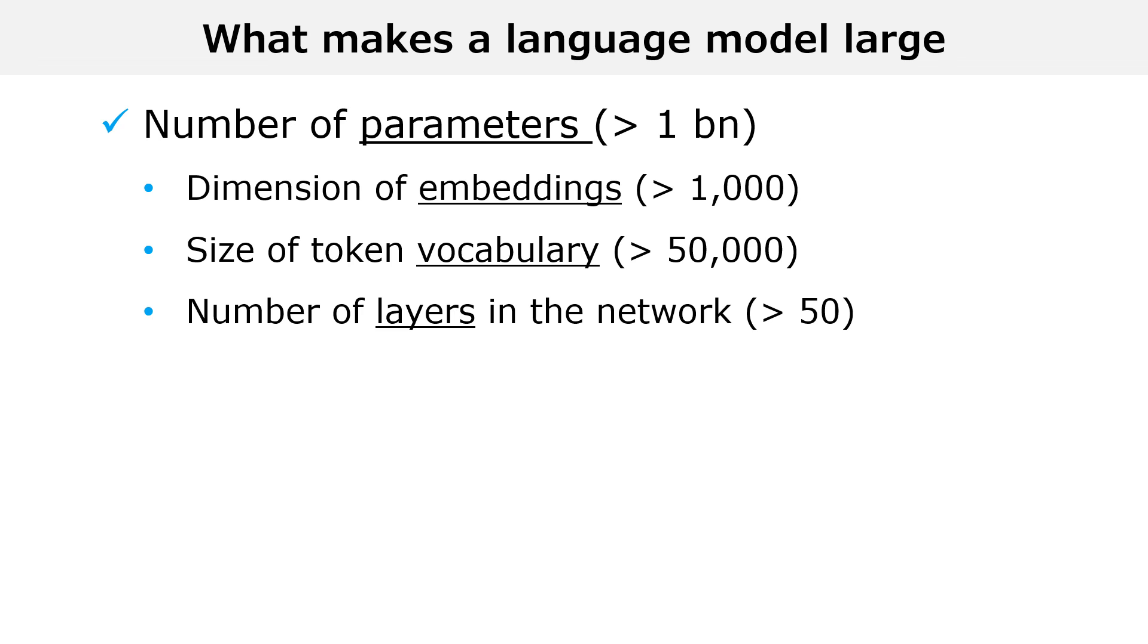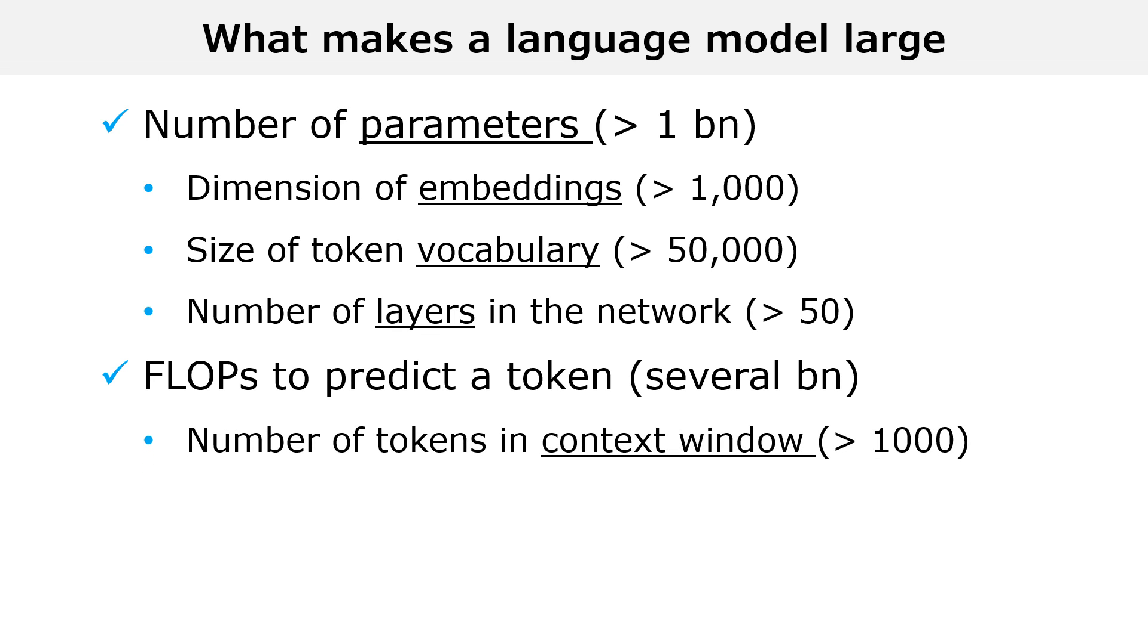Another way to quantify the size of a model is by counting the number of floating point operations that a computer needs to perform in order to predict a single token. Usually, in large language models, the number of operations per token is several billions and in some cases it comes close to a trillion. Besides the parameter count, an important factor that contributes to determine the number of operations per token is the dimension of the context window, that is, how many previous tokens we take into account when we predict the next token.